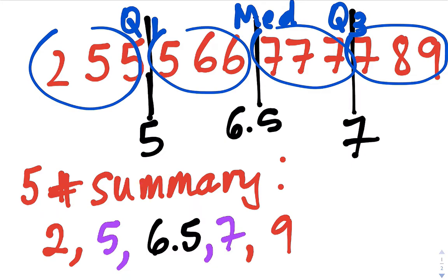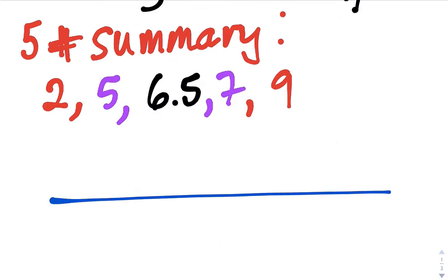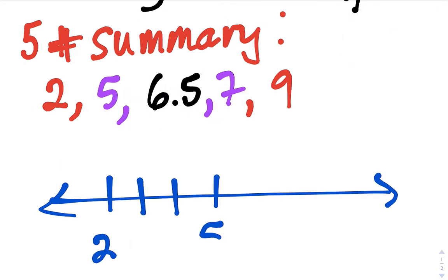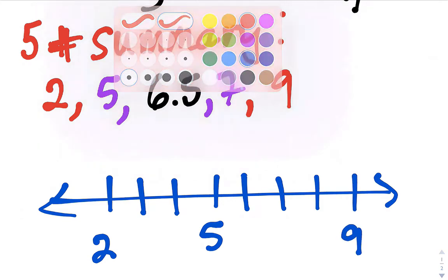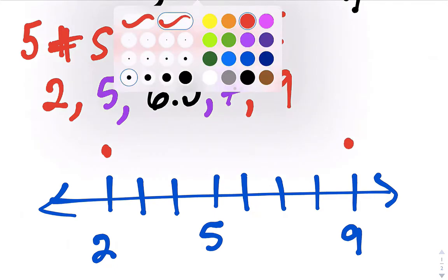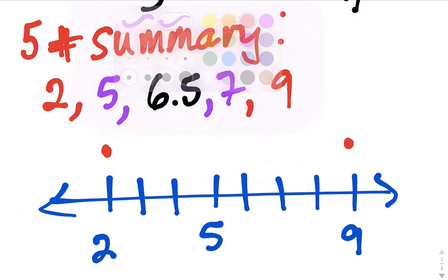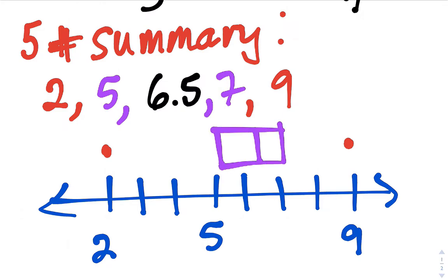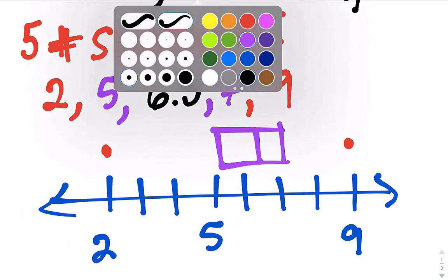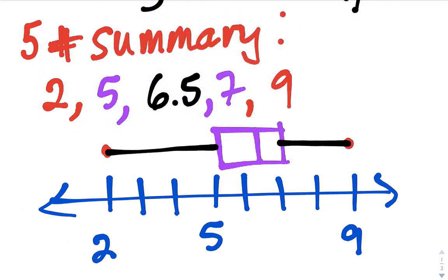So if we take a look at these, we can make our box and whiskers plot. Scaling by one from 2 to 9, remember the min and max are dots. Q1, the median, and Q3 are lines — so at 5 draw a line, at 6.5 draw a line, at 7 draw a line. There's the box part, and then the whiskers connect the min and max to Q1 and Q3. So there's our box and whiskers plot.